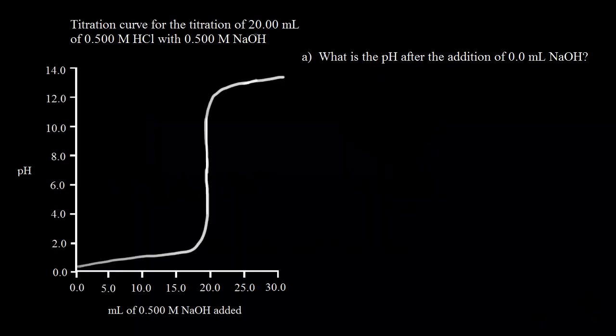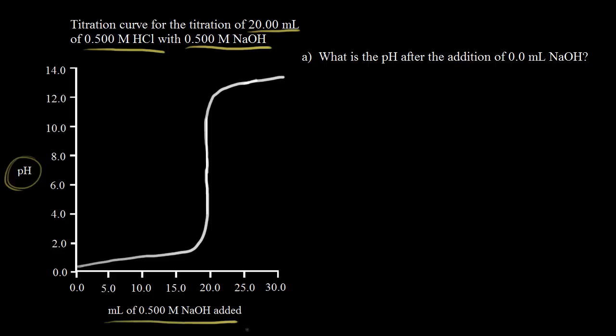Let's say we're doing a titration, and we start with 20 mLs of 0.500 molar HCl. So we're starting with a strong acid, and to the strong acid, we're going to add a solution of a strong base — a 0.500 molar solution of NaOH. As we add the base, the pH is going to increase, and we can show this on our titration curve. We put the pH on the y-axis and the volume of base we are adding on the x-axis.